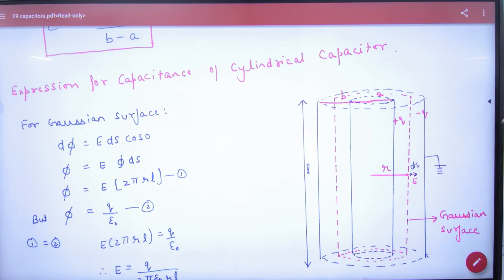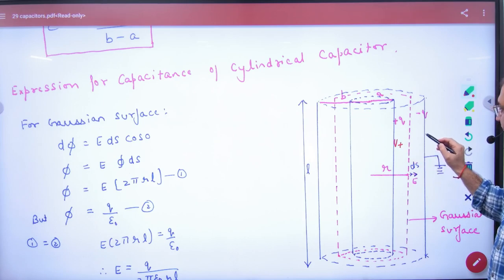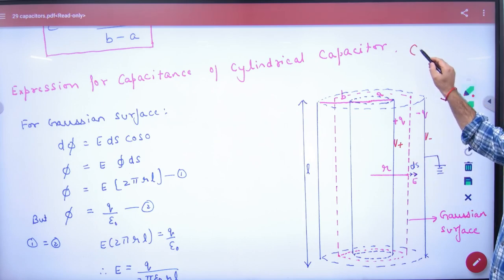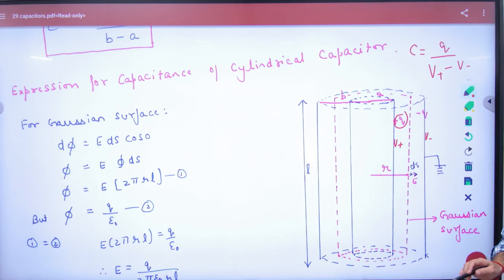If you want to derive capacitance, what is V positive, what is V negative? So what is the capacitance? It's the charge Q divided by V positive minus V negative. So you have to derive the potential difference.